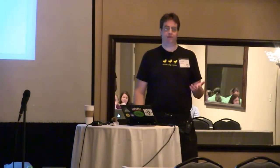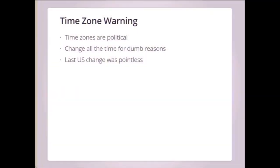Time zones are political, which means they're crap. They change all the time for the stupidest reasons. The latest change driving me out of my mind is Morocco decided their daylight saving transition would be based on the end of Ramadan. Ramadan is based on the Islamic calendar, not the Gregorian calendar. So every year the DST transition happens at a time that's completely unpredictable if you're just looking at the Gregorian calendar. The existing tools for managing time zones have no way of representing this in the Islamic calendar — they have to pre-calculate the Islamic calendar for the next 400 years to get an approximation.